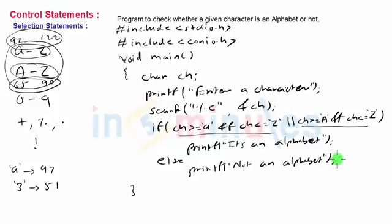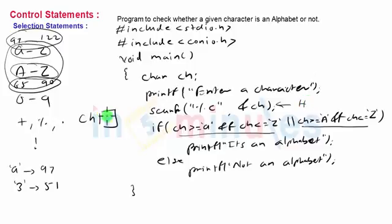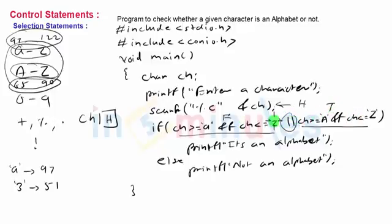In the program flow: ch is defined, a message 'enter a character' appears, and a character is input. Suppose the input was 'H' — ch stores 'H'. The computer checks whether ch is between 'a' and 'z' — that is false because 'H' is uppercase. Then it checks whether ch is between 'A' and 'Z' — that condition is true.